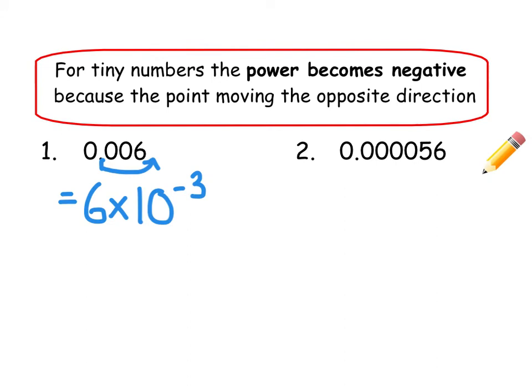On the second one, decimal point is going to travel to after the first digit, so that's 5.6. And we're moving it 1, 2, 3, 4, 5 places. So it's 5.6 times 10 to the power negative 5.